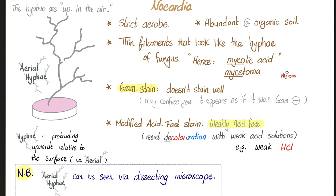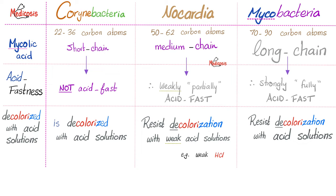But which type of Nocardia? What's the species? For that, you will need some genomic sequencing. Corynebacteria have short-chain mycolic acid, 22 to 36 carbons — not acid-fast, because this is not long enough, and it will be decolorized when you add acid to it. Nocardia is kind of in the middle — medium chain — therefore weakly acid-fast.